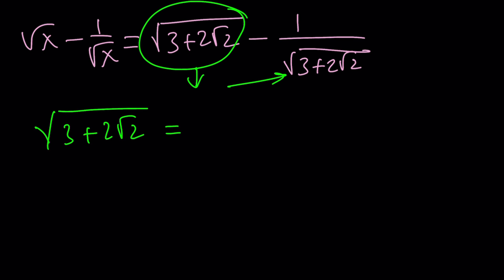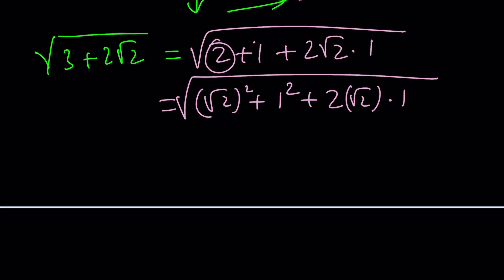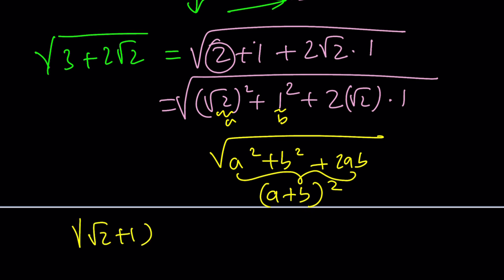Let me show you. We can write this as 2 plus 1 plus 2 times root 2 times 1. And then we're going to write this as root 2 squared and this one as 1 squared and this one as 2 times root 2 times 1. Now what does that look like? If that's not clear to you, then call this a and call this b. You're going to get a squared plus b squared plus 2ab under the radical, and you should know that this is equal to a plus b quantity squared. In other words, this is square root of root 2 plus 1 squared under the radical, and from here the square root and the square cancel out leaving us with root 2 plus 1. So the square root of 3 plus 2 root 2 is root 2 plus 1.